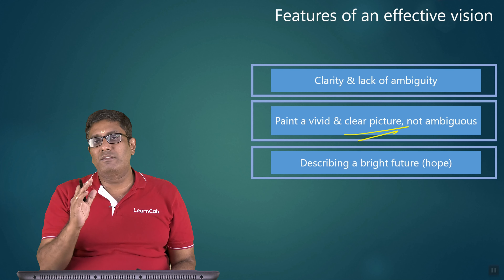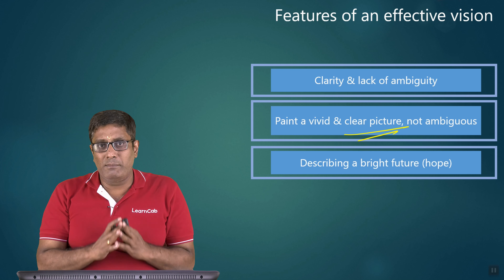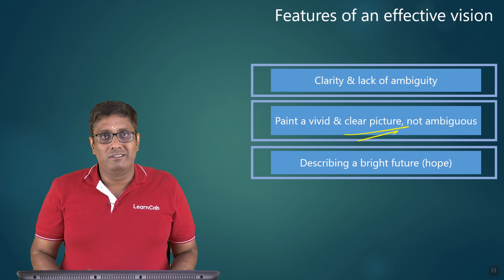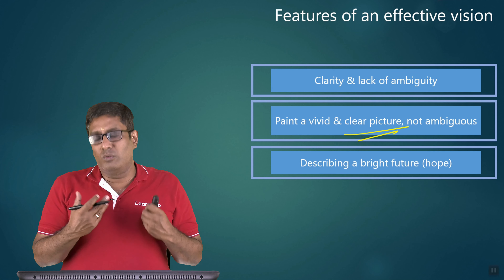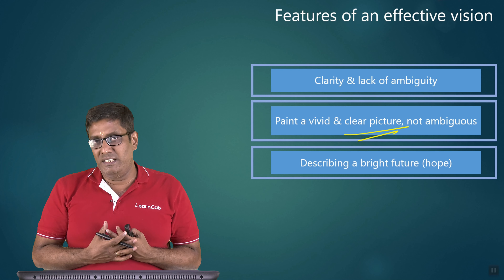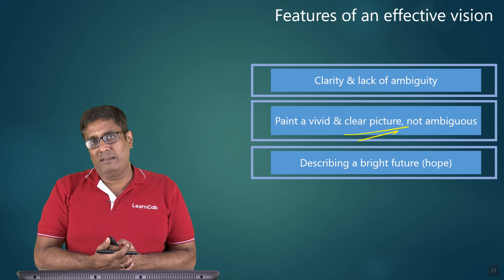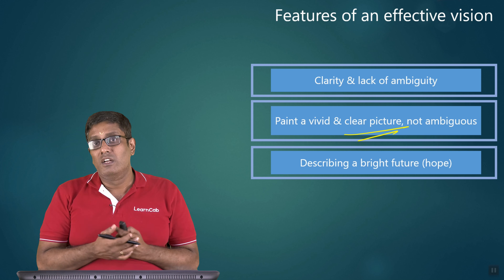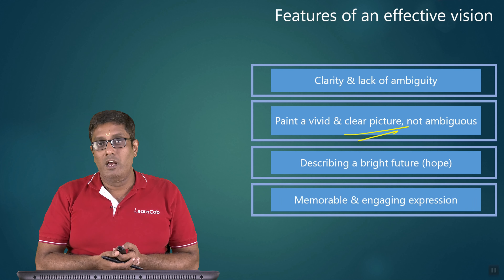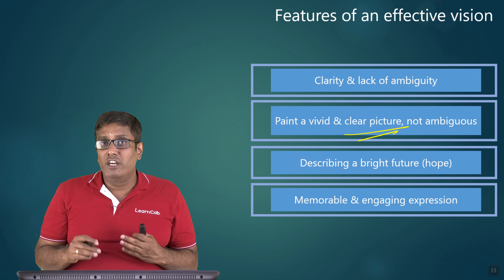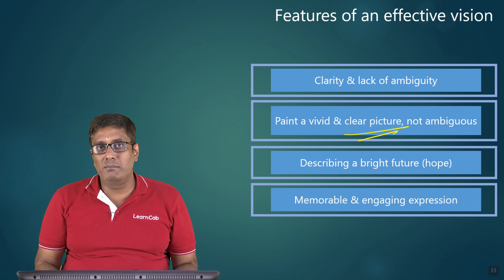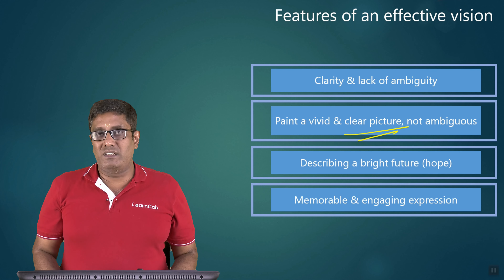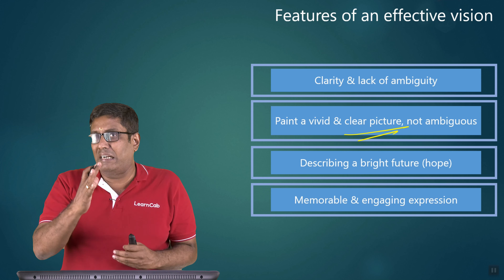Third: describing a bright future — the vision statement should describe the bright future of what the business wants to become. It should give hope. Fourth: memorable and engaging expression — it should be memorable so somebody can remember it easily, and it should be expressed in such a way that the audience is engaged.